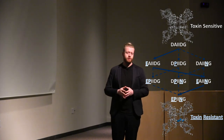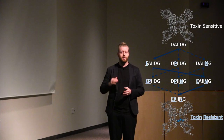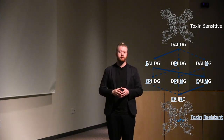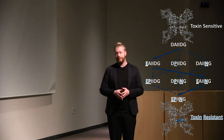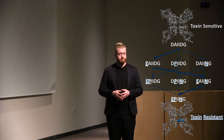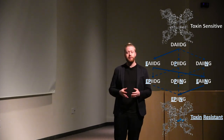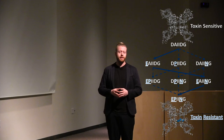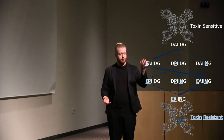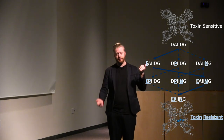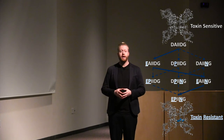But how do these snakes go about making these changes? To answer this question, I reconstructed every possible step between the toxin-sensitive and the toxin-resistant sodium channels, and then I measured the performance of each different mutant. Essentially, I answered the age-old question: how much sodium could a sodium channel channel if a sodium channel could channel sodium? And when you stack that up against how much toxin each different mutant can withstand, we start to get a sense of evolution's cost-benefit analysis.